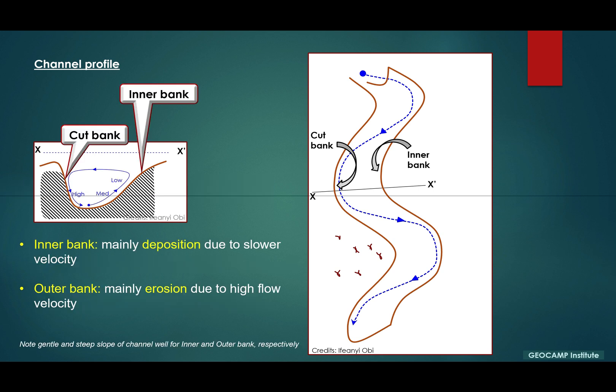The inner bank is where you have dominant deposition along the channel pathway, and in the outer bank you have dominance of erosion due to high flow velocity.